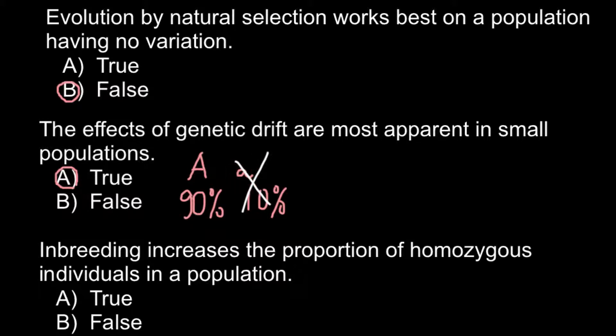this particular allele. So here is the answer A, this is true. The smaller the population, the more effect of genetic drift. Or also, for example, migration that brings new alleles in the population, or alleles can be lost due to emigration. So next question,